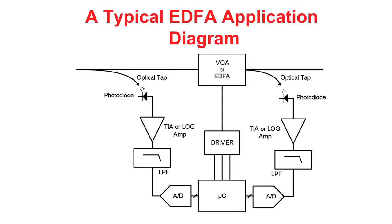The typical block diagram of an EDFA or a variable optical attenuator is shown here. Notice that a small percentage of the optical signal, usually one to three percent, is tapped off the main optical path and detected by a pin photodiode. The current produced by the photodiode is converted to a voltage, filtered, and converted to digital for further signal processing to control the gain or attenuation of the optical path. It should be noted that both input and output optical power is monitored in these types of systems. Fast response time of the detector circuit is required to detect when channels are added or dropped from the network.